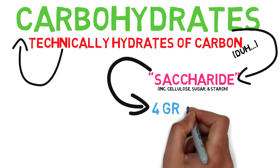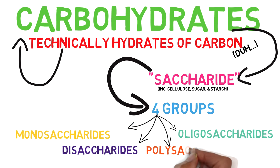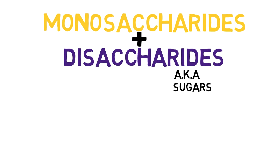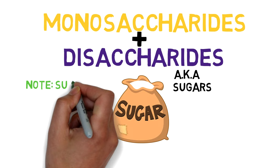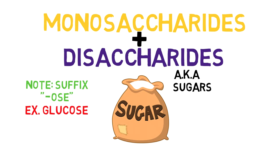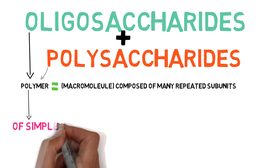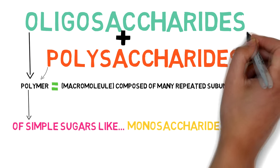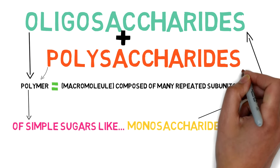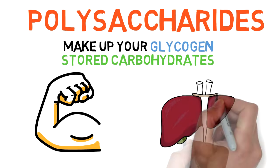The saccharides are split into four main groups: monosaccharides, disaccharides, oligosaccharides and polysaccharides. Monosaccharides and disaccharides are commonly referred to as sugars and they are usually recognisable by names with the suffix "-ose", for example glucose. Oligosaccharides and polysaccharides are typically polymers of simple sugars, with oligosaccharides containing 3 to 10 monosaccharides and polysaccharides containing over 10. Polysaccharides are what make up your glycogen, or stored carbohydrates, in your muscles and liver.